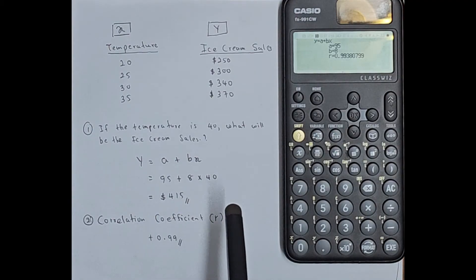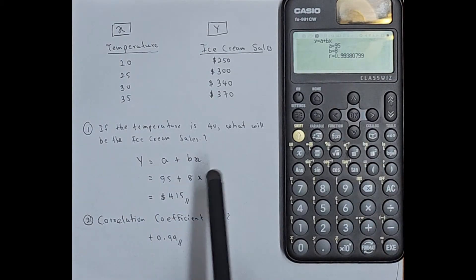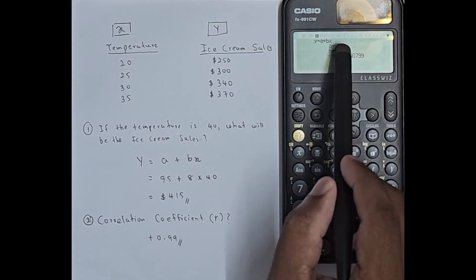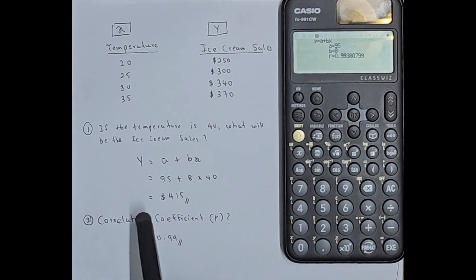Now here you can clearly see for A you have 95. For B you have 8. And they have given the R value also. So let's come to that R value.